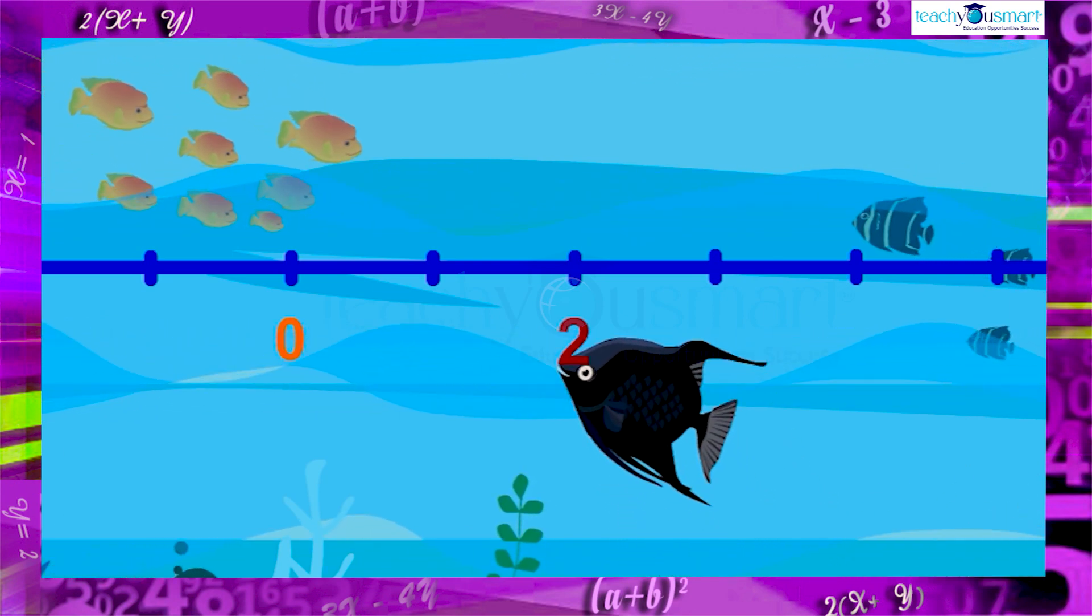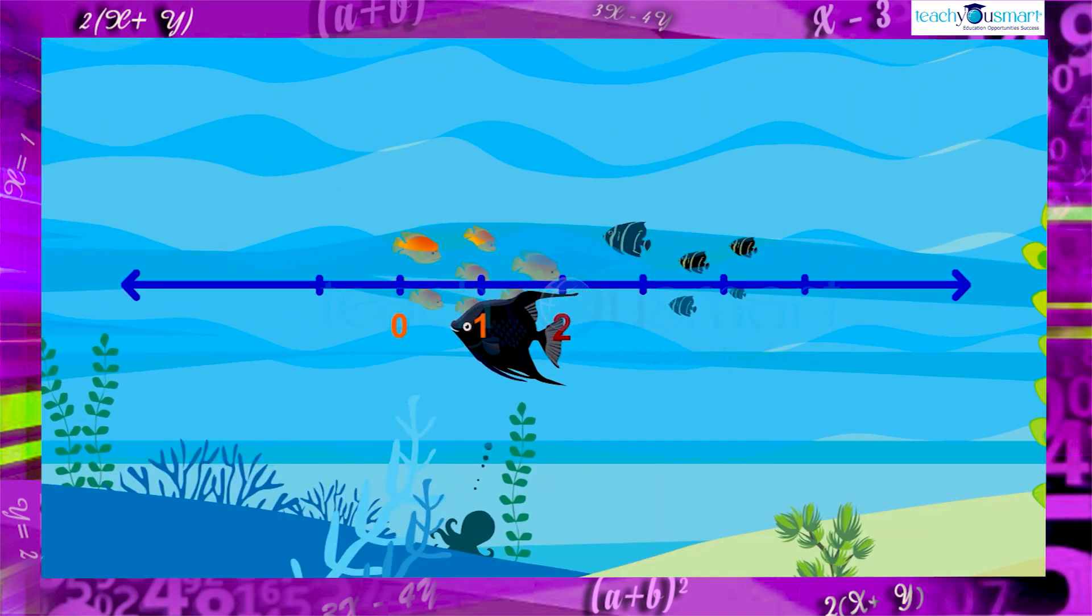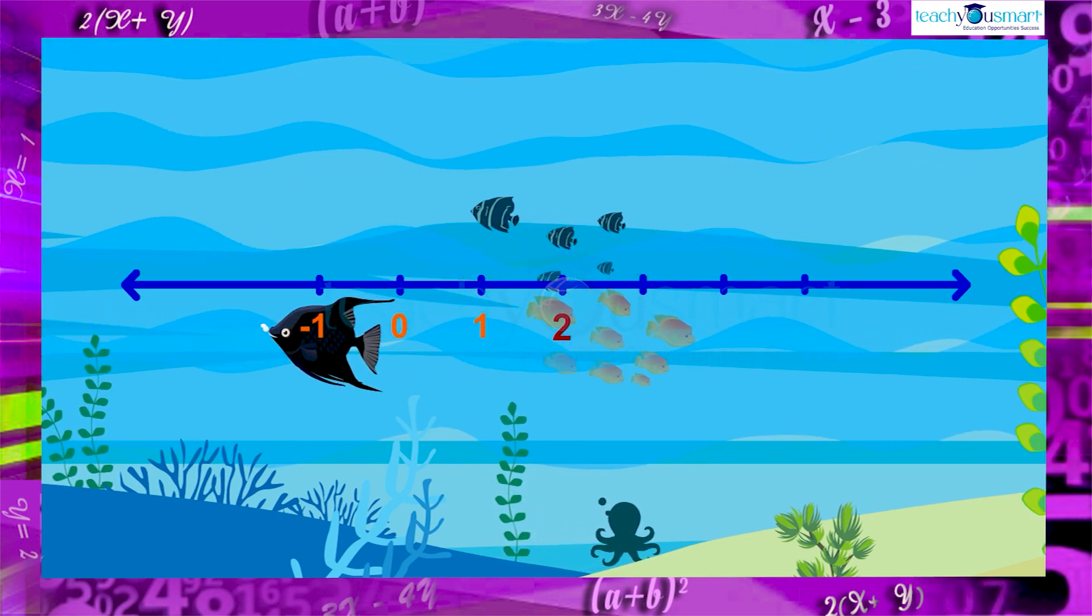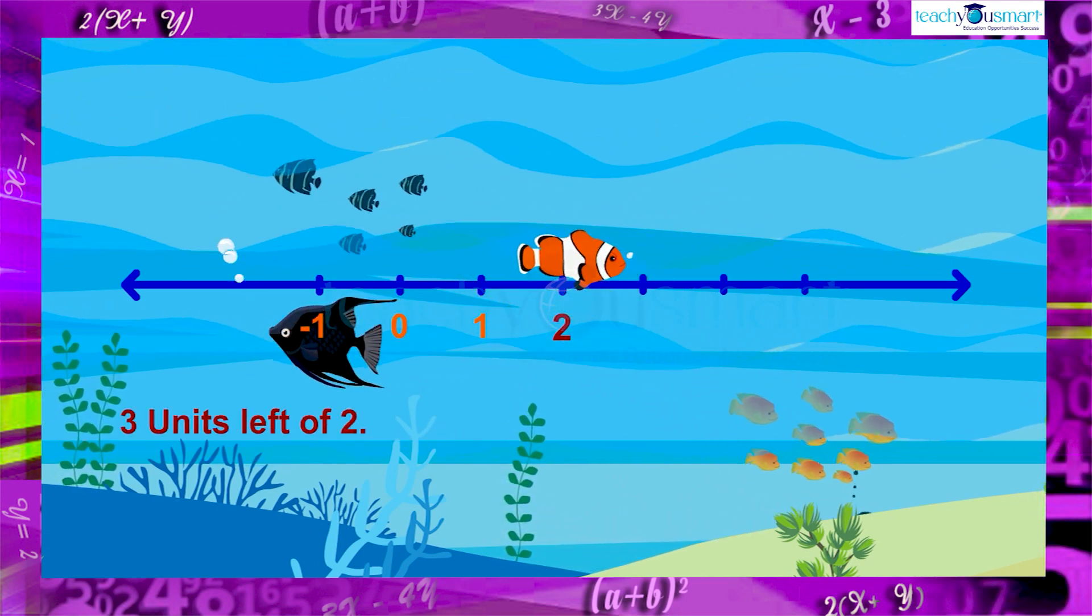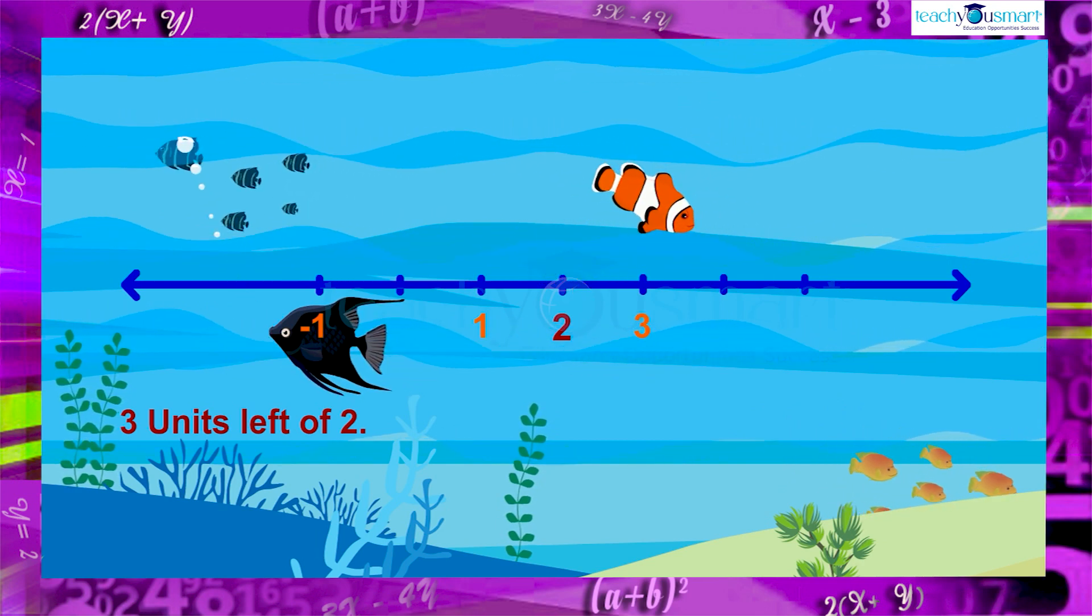Then, the position two minus three will be three units left of two. And that of two plus three will be three units right of two.